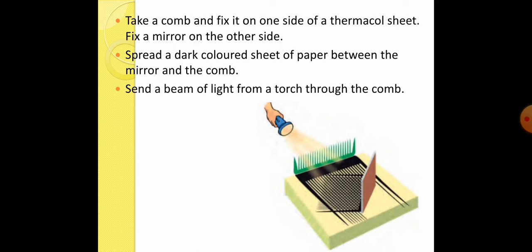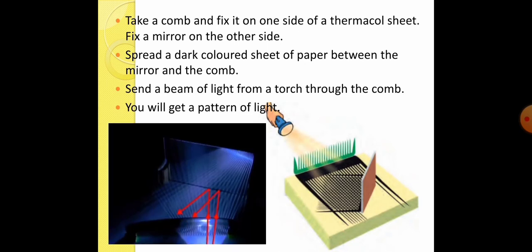Okay, and the fourth step is, you will get a pattern of light. You can see in the given picture, the pattern of light should be like this. And this pattern is something like this. Okay, as you can see, and this is the source of light beam. Okay, so overall, both experiments have proved that light travels along a straight line.